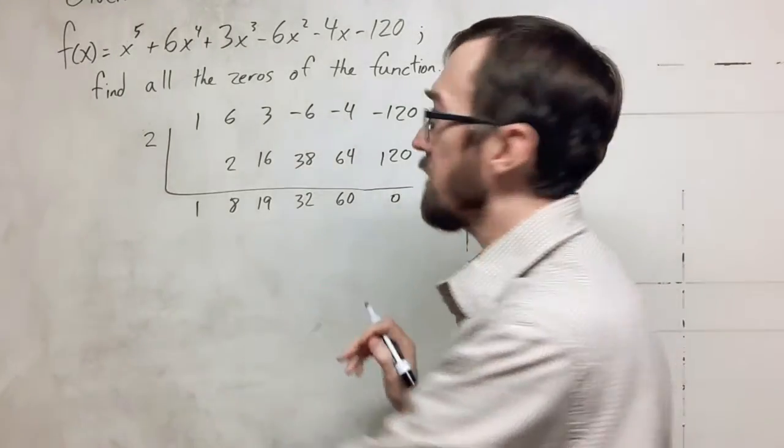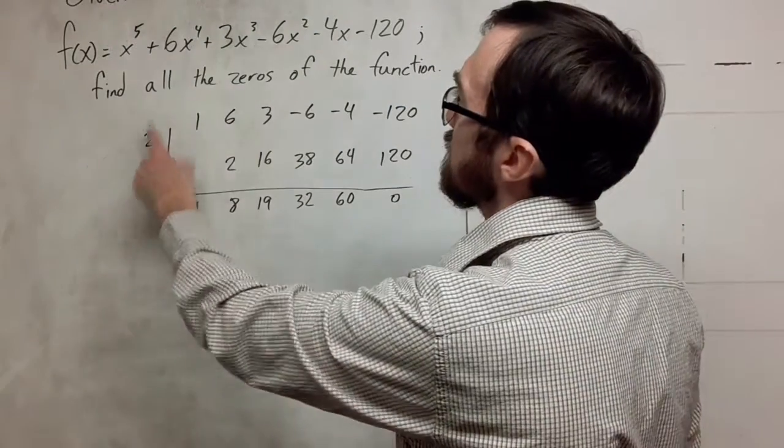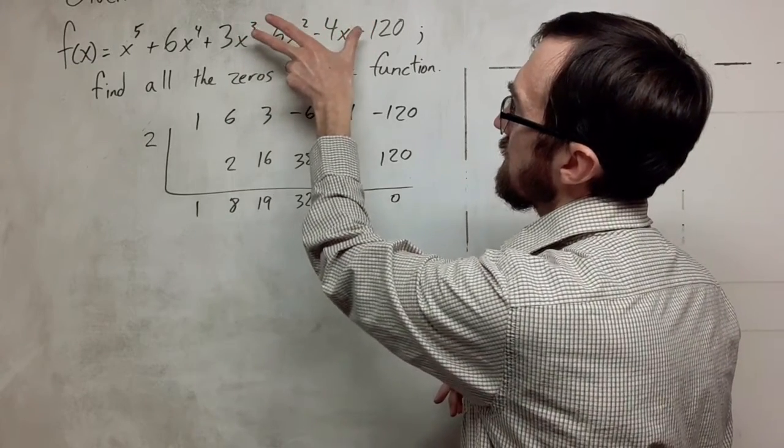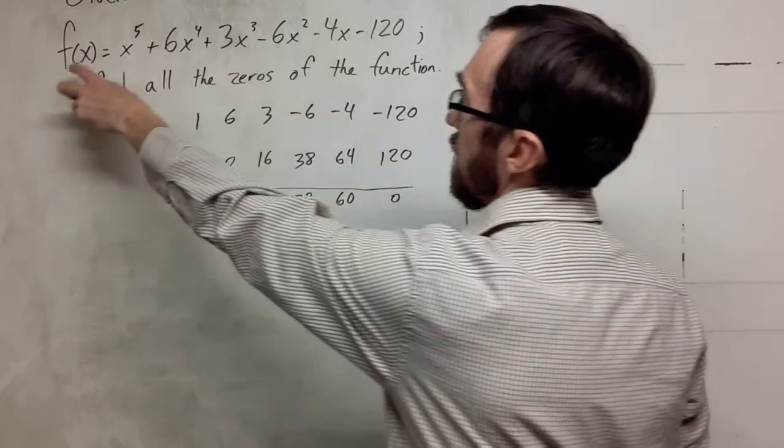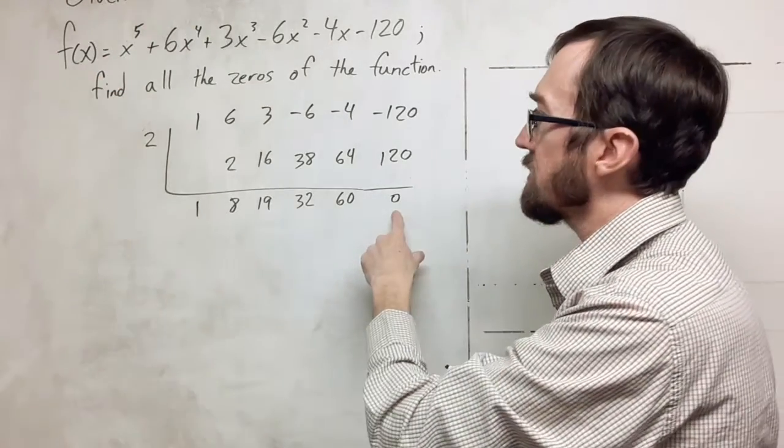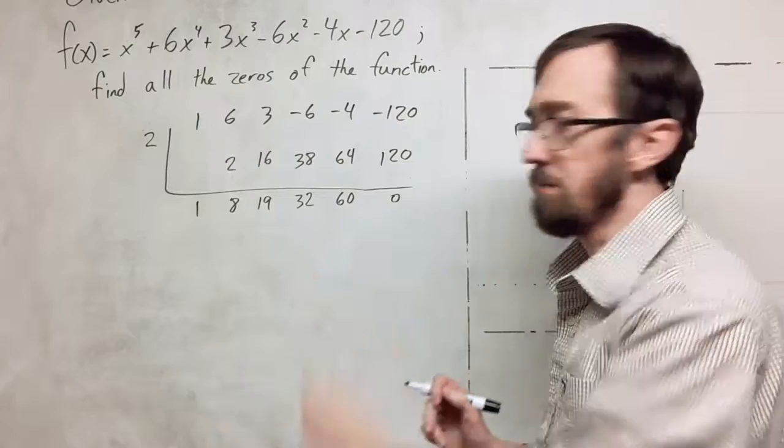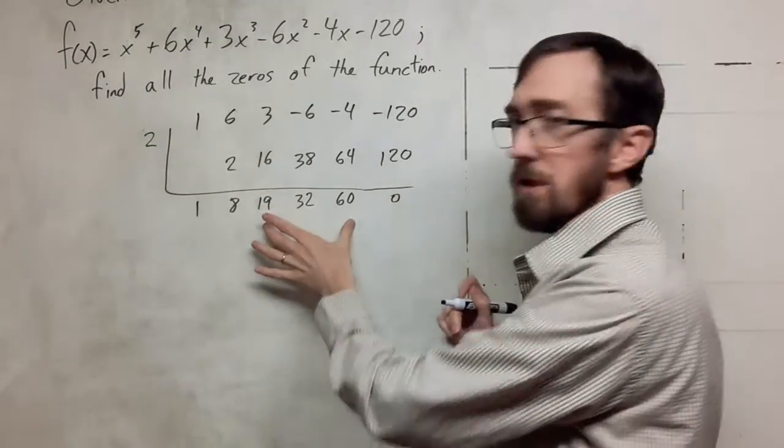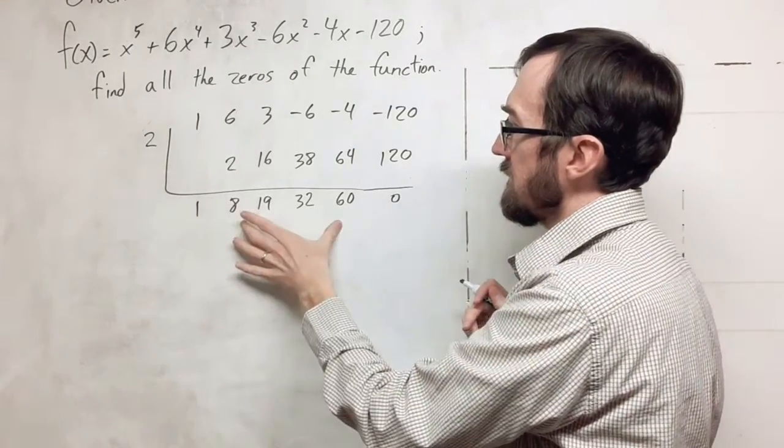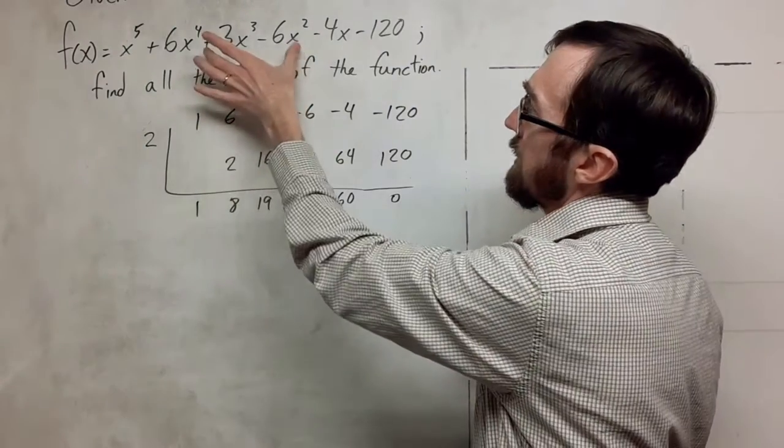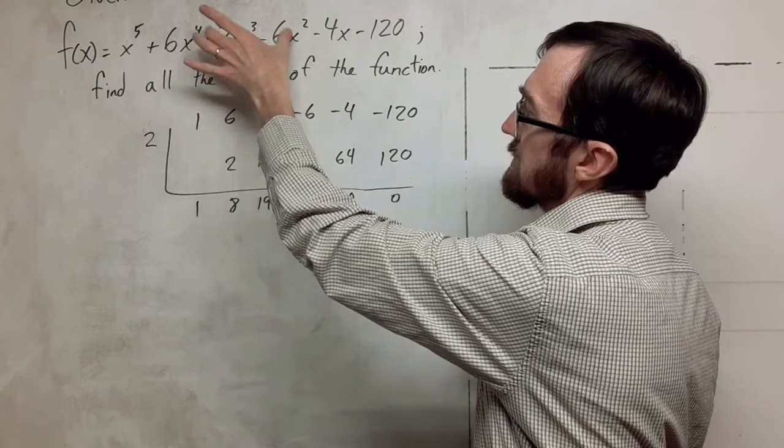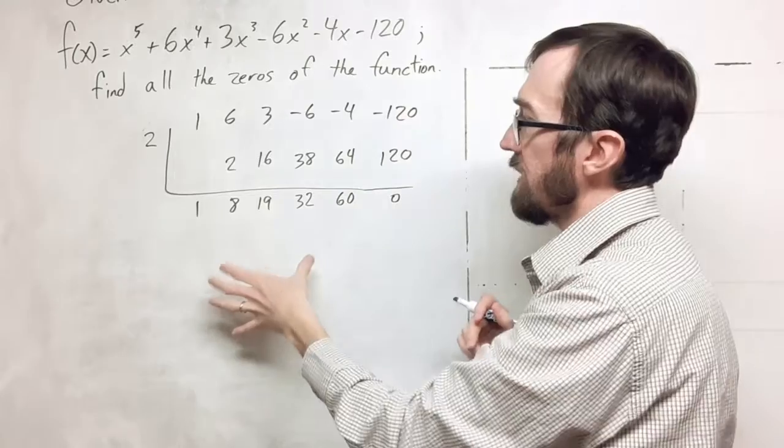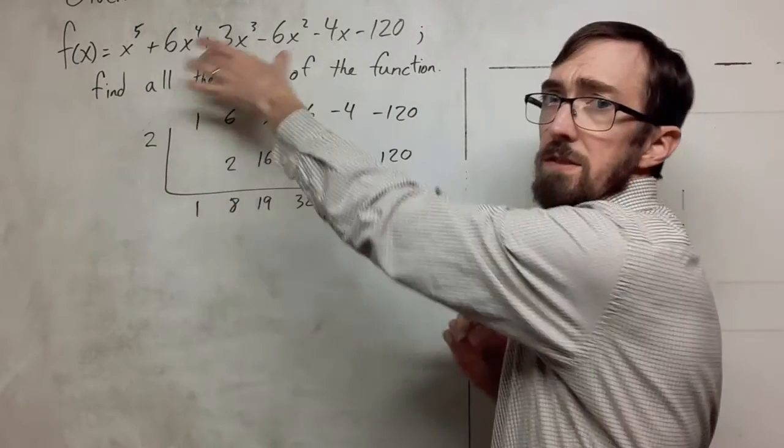Since this ends with a zero, we know that this is one of the x's that will work. If we plug x into here, the y value will be 0 according to the remainder theorem. I'm just going to make my next division bracket under here and try dividing into this. This is the depressed polynomial that we got from dividing out the x minus 2. If it divides this, it divides this.